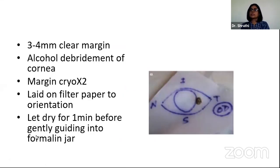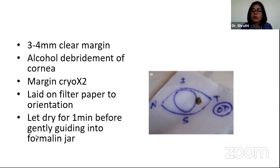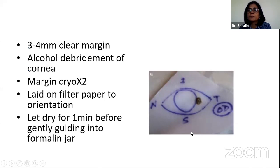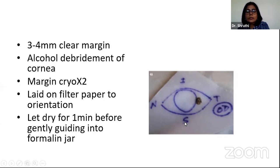For management of OSSN, I prefer to take at least 4 millimeters of clear margin with alcohol debridement of the cornea. Margin cryo is applied two times to the cut end of the conjunctiva. The specimen is laid on filter paper for orientation — on a Whatman filter paper 45 — placed at the limbus and marked by eye, then temporal, nasal, inferior, or superior, and left to dry for a minute before placing it into the formalin jar.